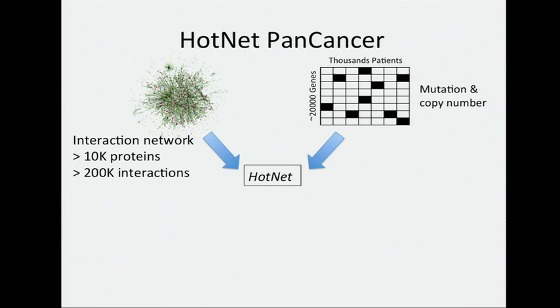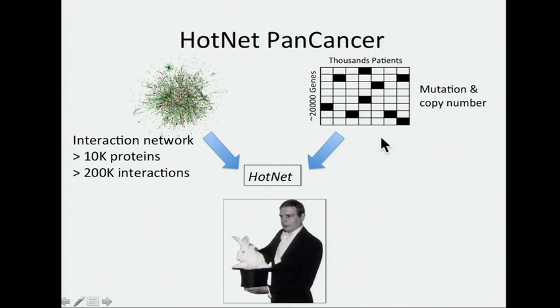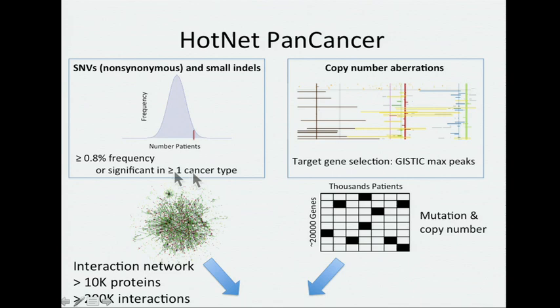The story I'd like to tell you is that we took a very noisy interaction network and took all the mutation and copy number data and threw it into HotNet. Unfortunately, the algorithm doesn't yet perform magic. We can't take all mutation data and copy number data — there's just too much noise. So we have to do a little bit of filtering. For single nucleotide variants, we don't have to restrict to just significantly mutated genes. Here we used a cut-off of only 0.8 percent frequency of mutation, which reduced some really low frequency mutations.